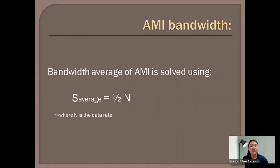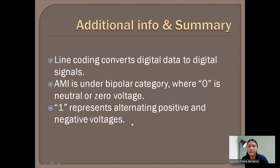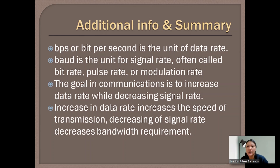The AMI bandwidth average is solved using: average = one-half N, where N is the data rate. In summary: line coding converts digital data to digital signals. AMI is under the bipolar category where 0 is neutral (0 voltage) and 1 represents alternating positive and negative voltages. BPS (bits per second) is the unit of data rate, and BAUD is the unit for signal rate, also called bit rate, pulse rate, or modulation rate. The goal in communications is to increase data rate while decreasing signal rate — increasing data rate increases transmission speed, and decreasing signal rate decreases bandwidth requirement.